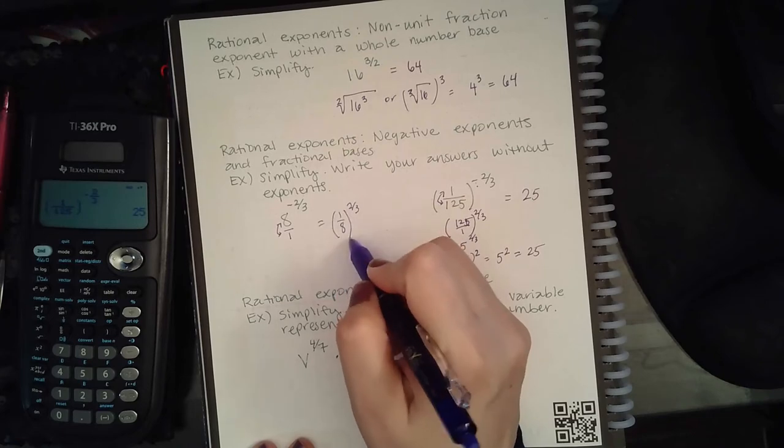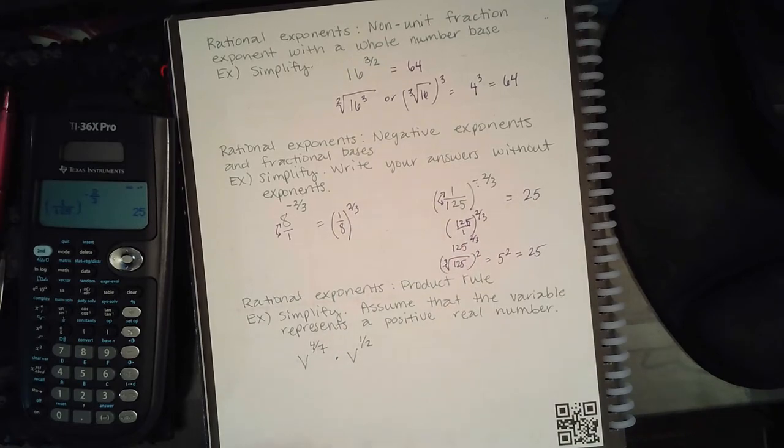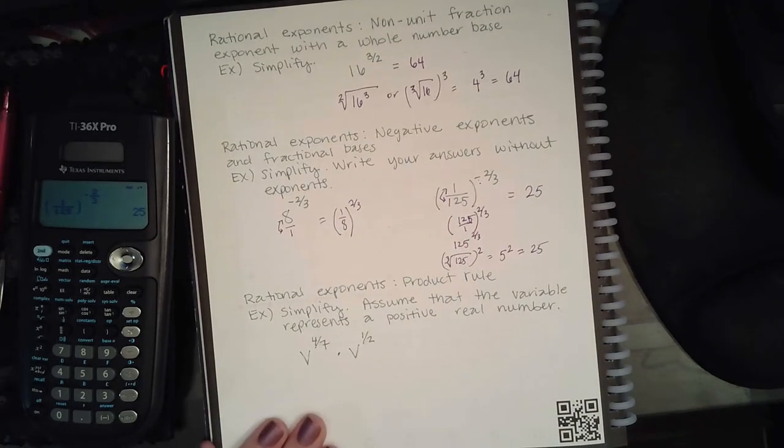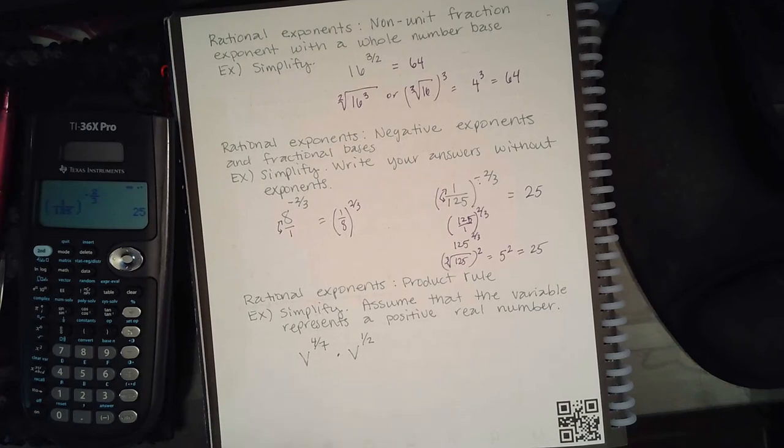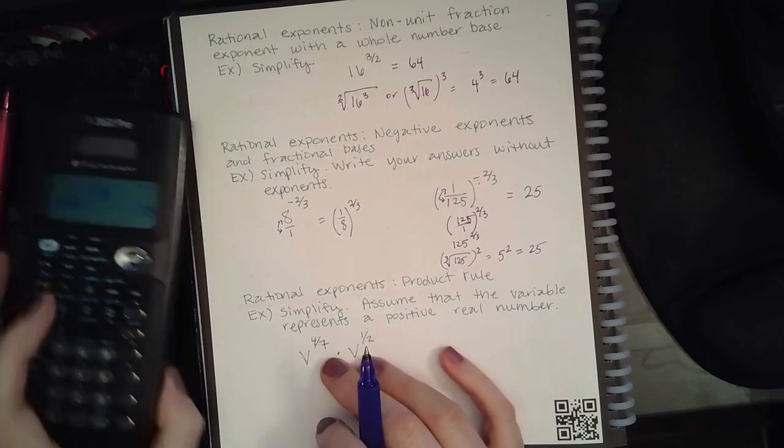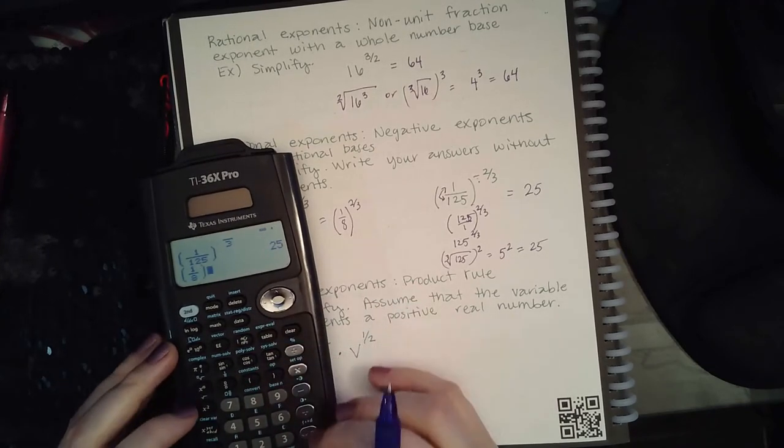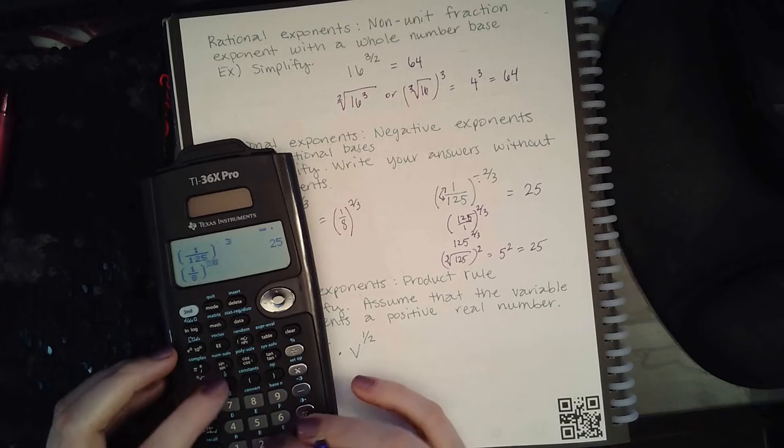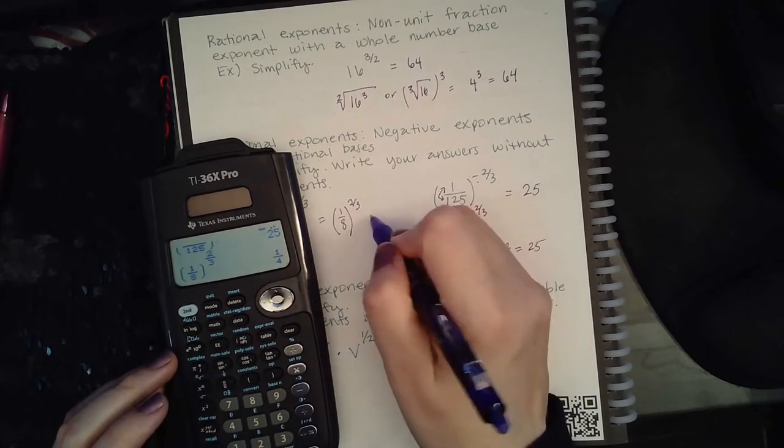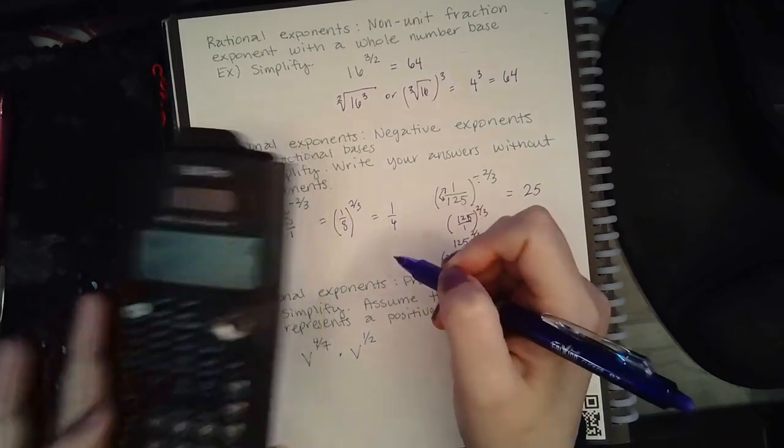Now 2/3rds doesn't apply just to the 1, it applies to the whole 1/8. So we do need to put in the parentheses there to indicate that the 2/3rds is for the entire number 1/8. So in my calculator I will type parentheses, 1/8, close the parentheses, exponent 2 over 3.